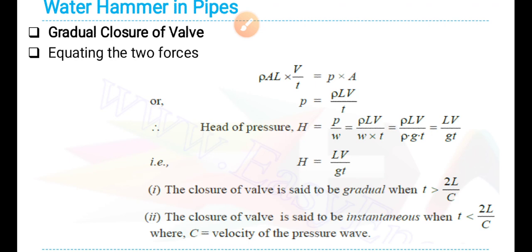If it is gradual, T must be greater than 2L by C. In order to say it is instantaneous or sudden or rapid, T should be less than 2L by C, where C is velocity of the pressure wave as I already said.